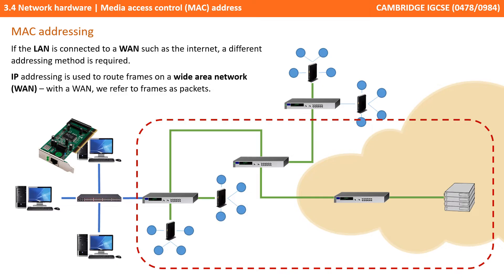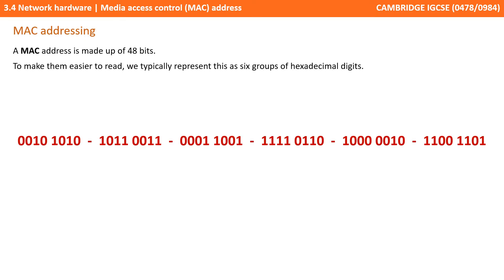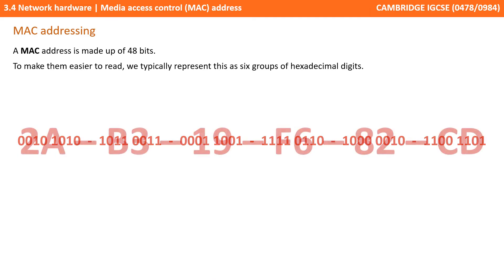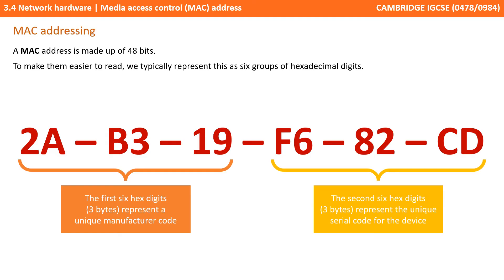We'll be looking at IP addresses in more detail in the next video. A MAC address is made up of 48 bits. To make them easy to read, we typically represent this as six groups of hexadecimal digits. The first six hex digits make up a unique manufacturer's code, and the second six hex digits are the unique serial code for the device.